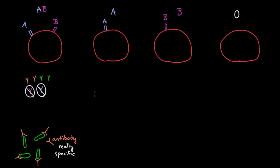This person with type A blood will make lots of antibodies against bacteria and viruses. But very importantly, he will make antibodies against the B protein. Will he make antibodies against the A protein? No, he will not, because he has A on his red blood cells — that would be a disaster. But he will make them against B, because he doesn't have any B proteins on his red blood cells, and therefore B will look like a foreign thing to him.